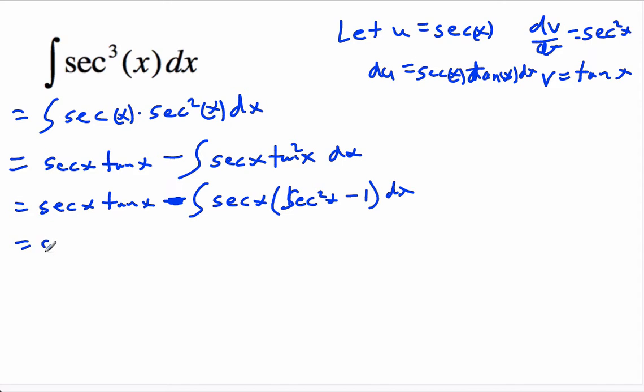Then we'll simplify that. We'll get secant x tan x minus secant cubed x, and this is going to be minus, minus is going to be plus the integral of just secant x.